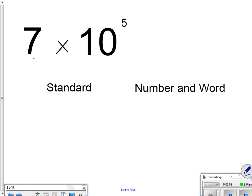It was 7, because 7 times 1 is 7. Have 5 zeros. 1, 2, 3, 4, 5. This one is 700,000. Kind of like the last one.